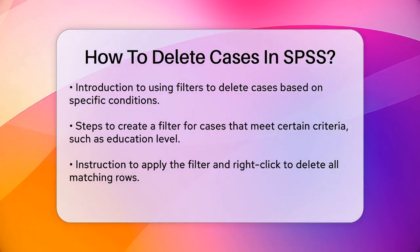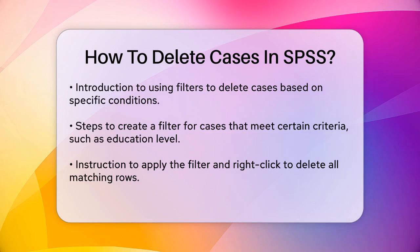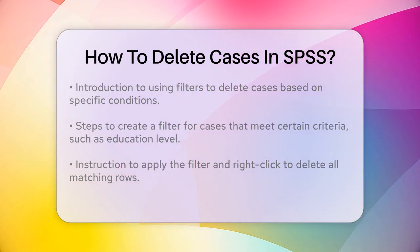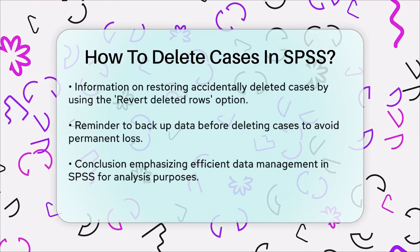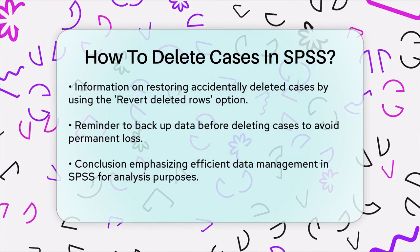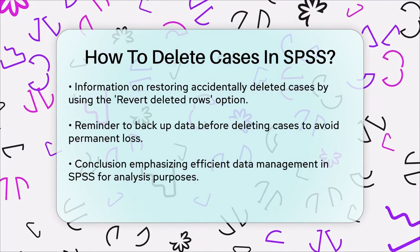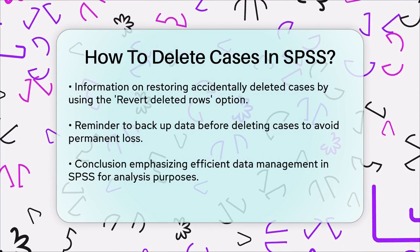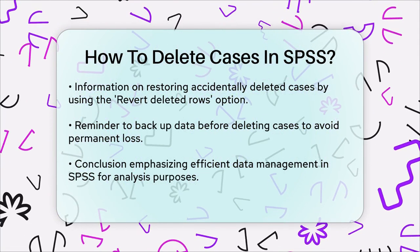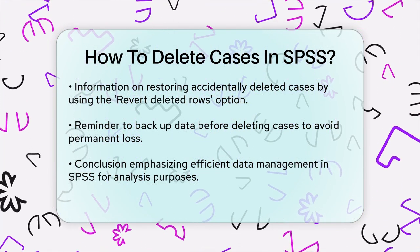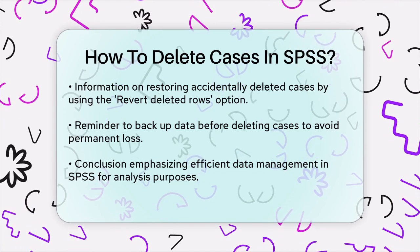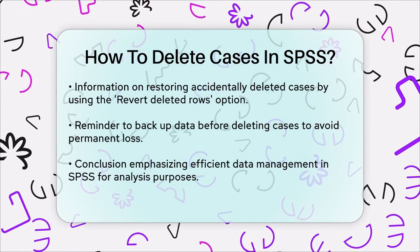If you accidentally delete cases and want to restore them, SPSS allows you to do so. Go to the data view, right-click on any row header, and select Revert Deleted Rows. Here you can choose the rows you want to restore, or tick the Check/Uncheck All checkbox to restore all deleted rows. Click Revert to bring back the deleted cases.